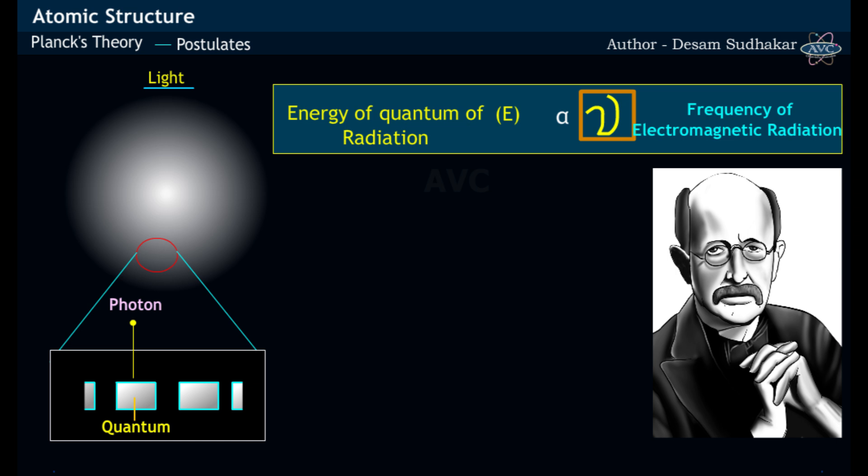Planck gave an empirical equation E equals N H nu, where N is an integer, and H is Planck's constant with a value of 6.625 times 10 to the power of minus 34 joules second.